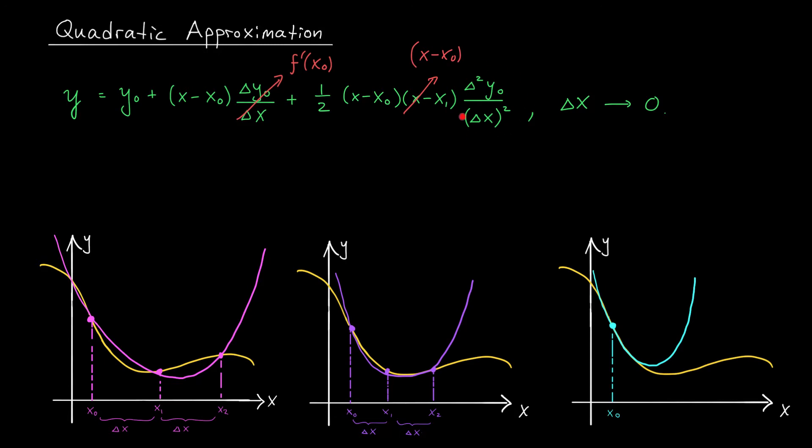And finally, we have this Δ²y_0 over Δx² term. Now, this term is a little harder to deal with. It turns out that it approaches the second derivative at x_0, but proving this is quite difficult. So we're not going to do it here. We'll just take it as a fact.